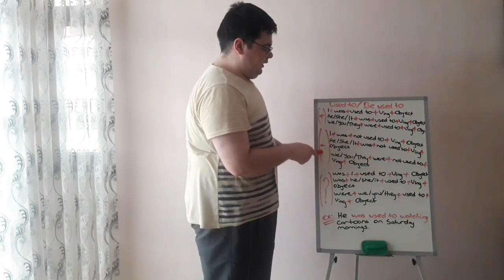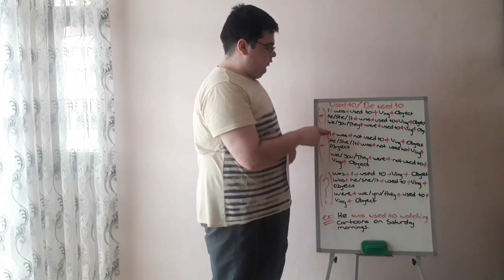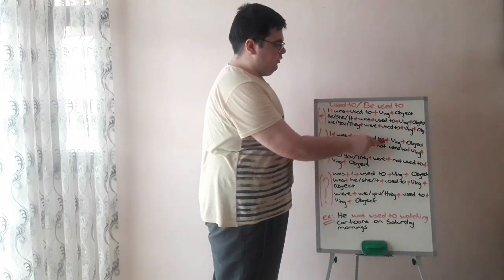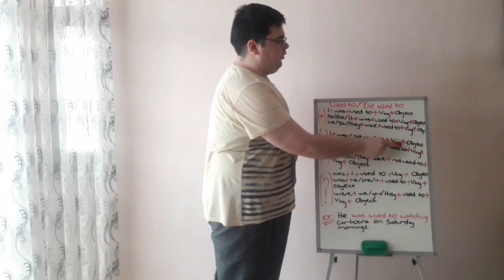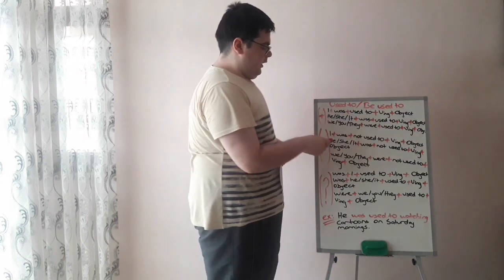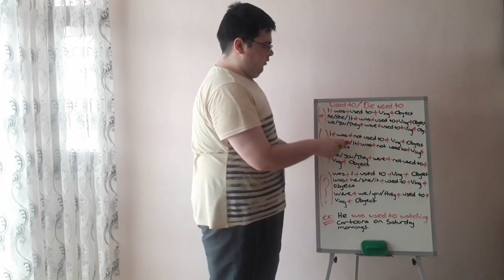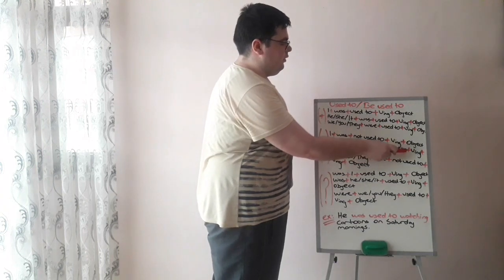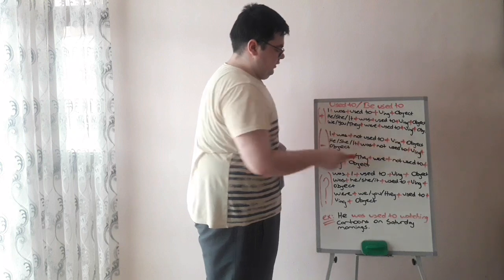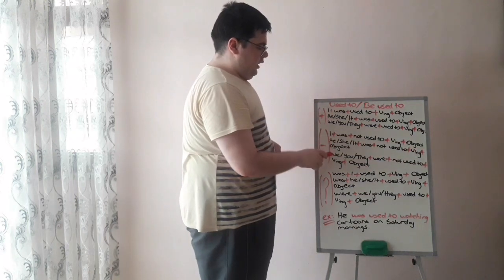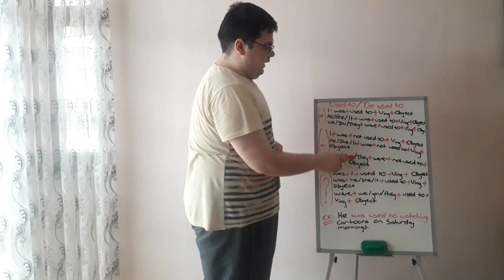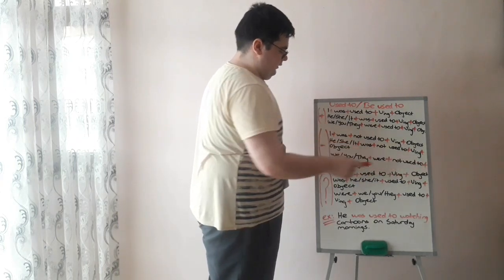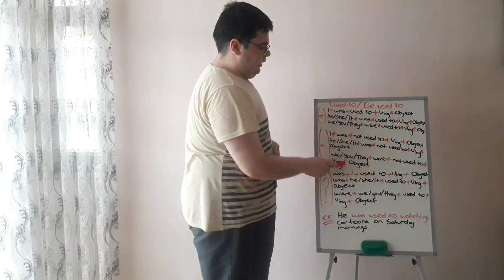For negative: I plus was, plus not used to, plus verb-ing, plus object. He, she, or it plus was, plus not used to, plus verb-ing, plus object. We, you, or they plus were, plus not used to, plus verb-ing, plus object.